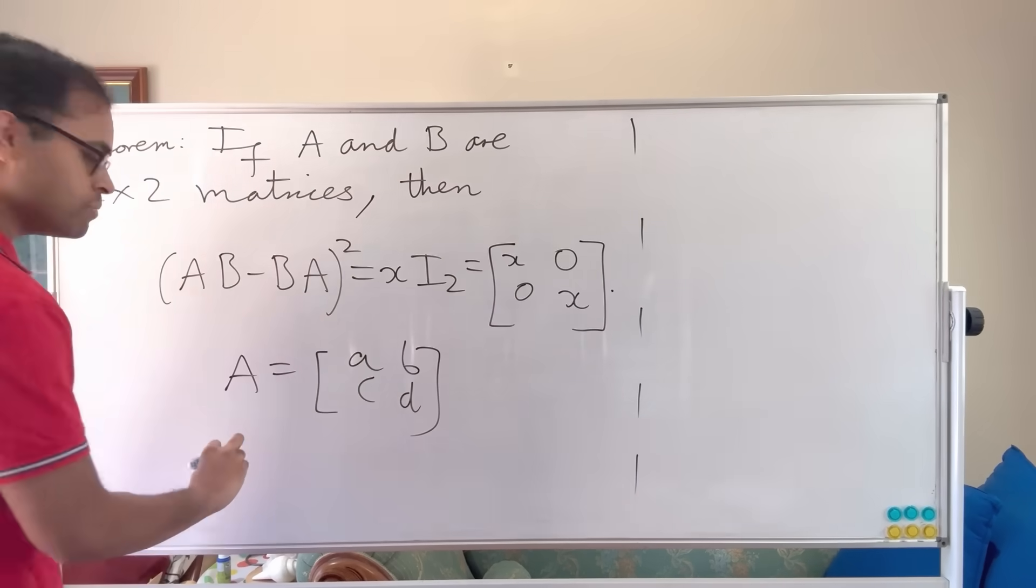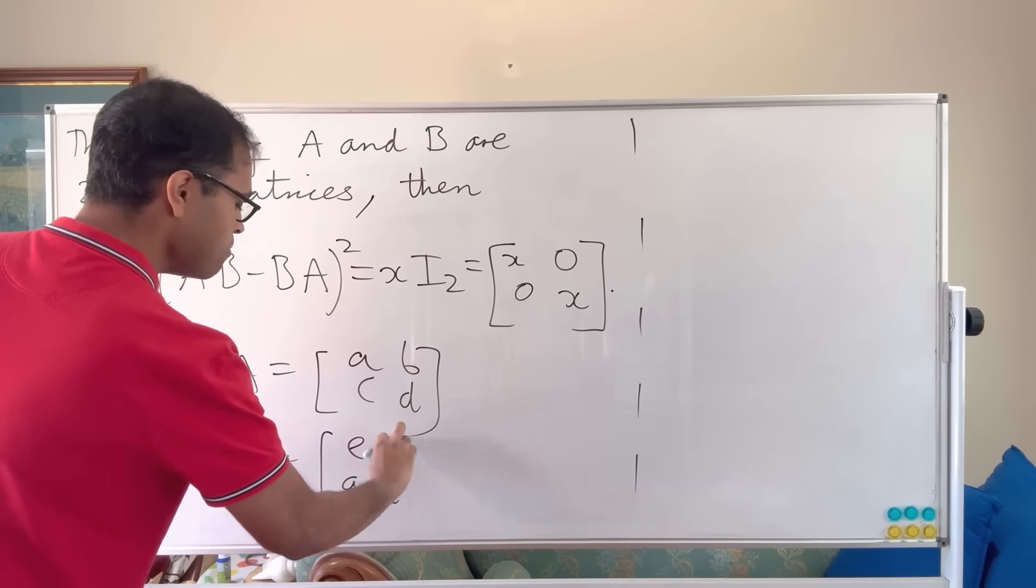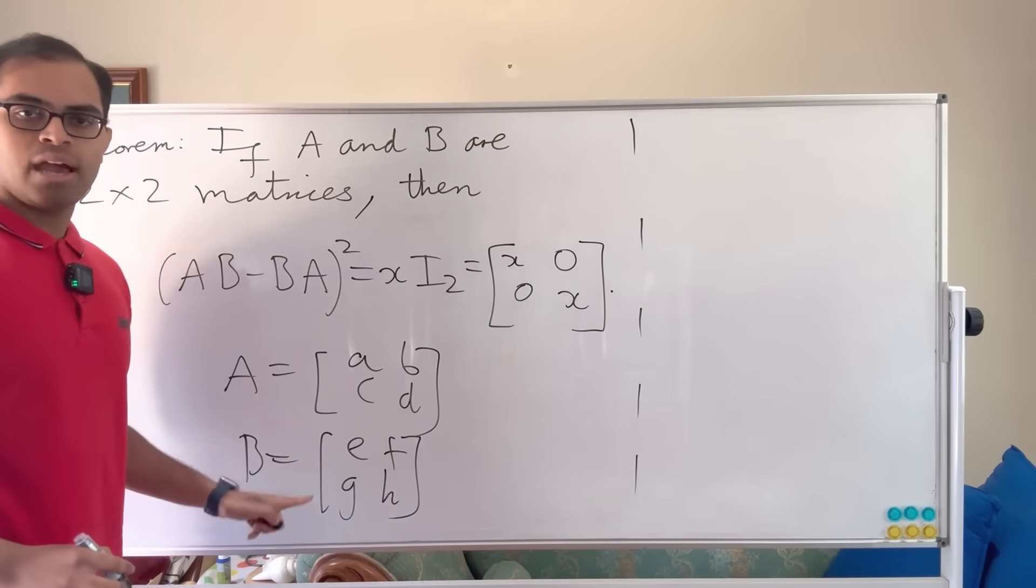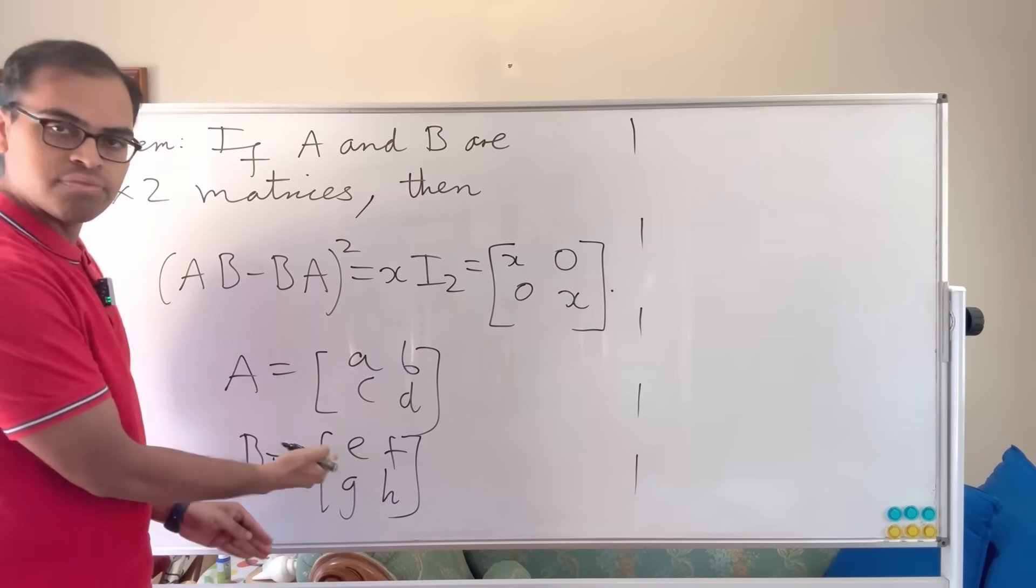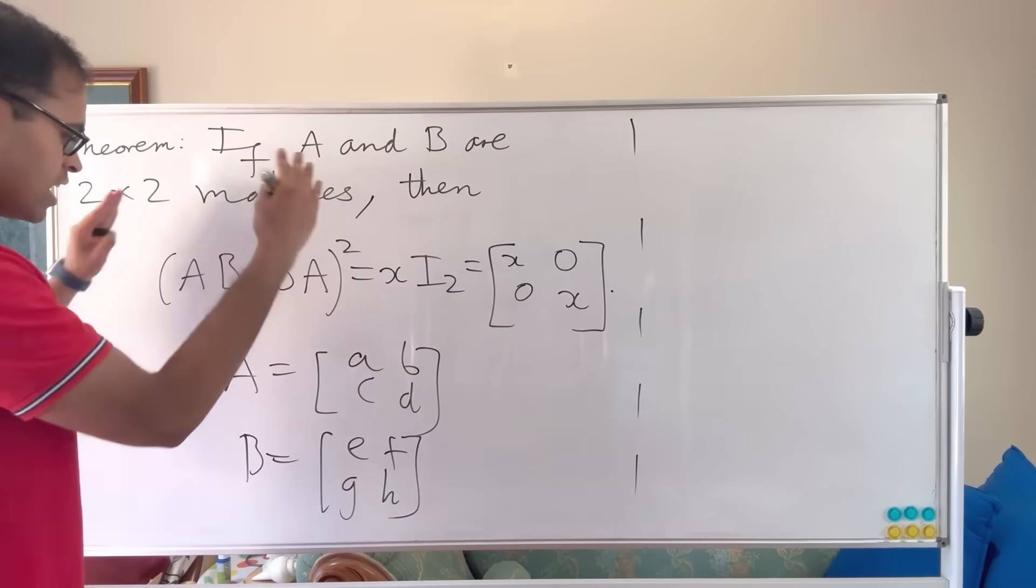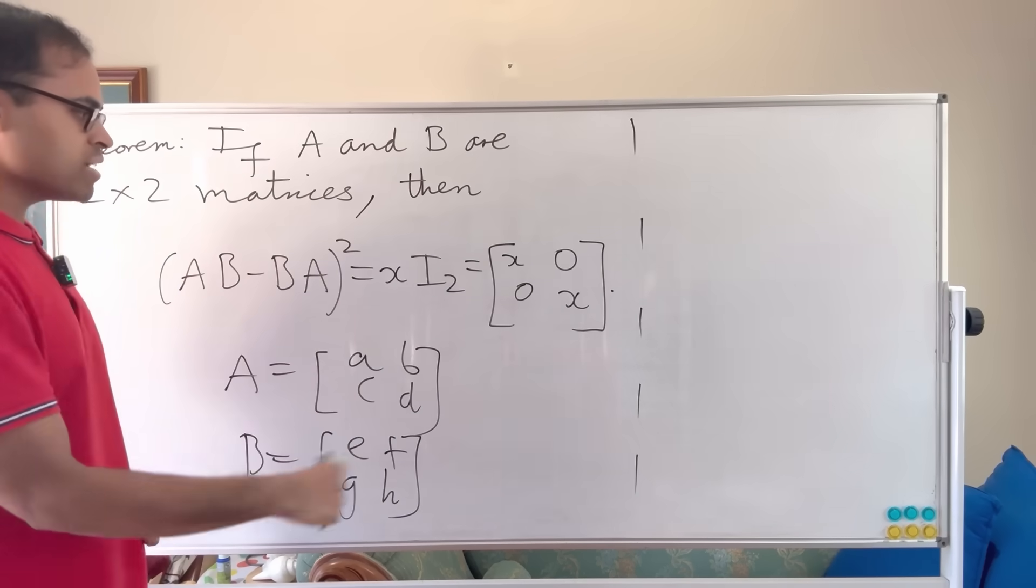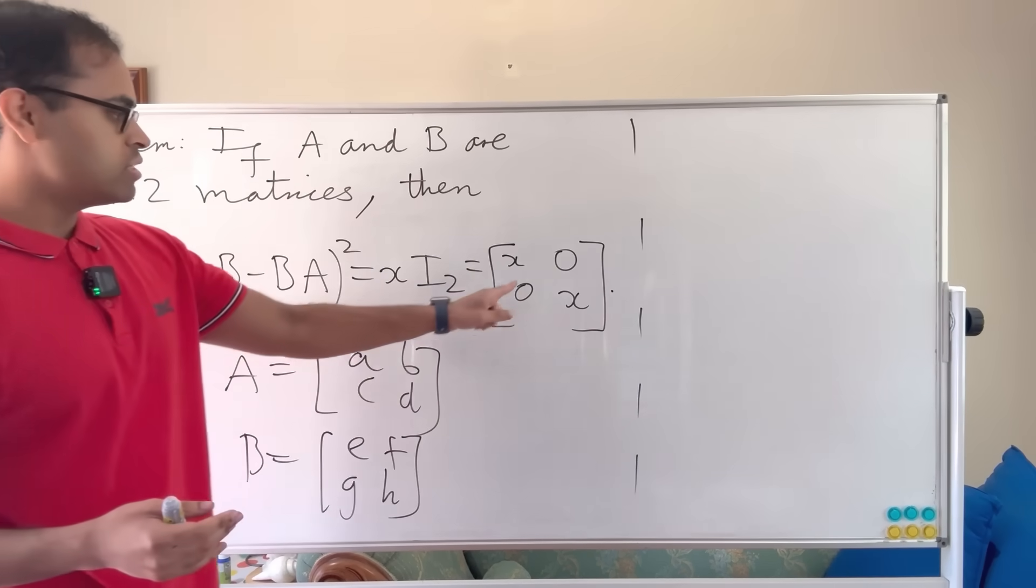d, and we wrote down that B was equal to something like e, f, g, h. Then what we could do is we could take A times B, write it in terms of all these variables, then take B times A, write it in terms of all these variables, take the difference, then square that matrix, we get a huge mess, we'll find some things cancel, and somehow it looks like this.